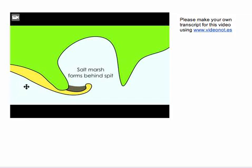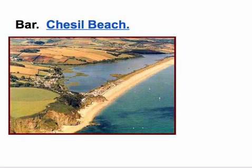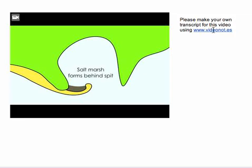Please have a watch of this video — it has no soundtrack, so it's your job to make a soundtrack, or at the very least to make a transcript to explain the formation of a spit and then later on a bar. Remember: this is the spit, and in the video when the spit forms all the way across from headland one to headland two, we get our bar, and then behind it we're going to have the saltwater marsh. It's pretty much a computer simulation of what's happening with Chesil Beach.